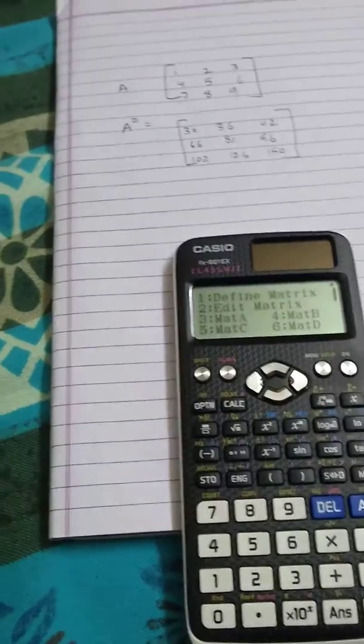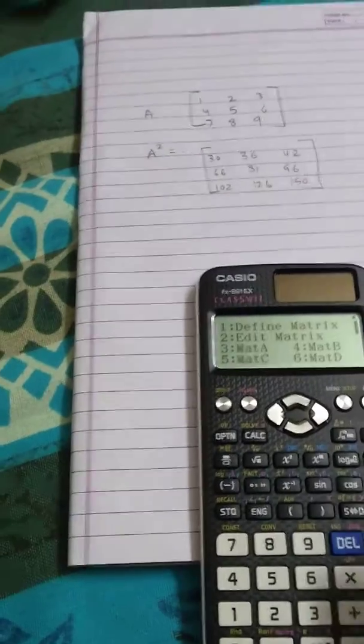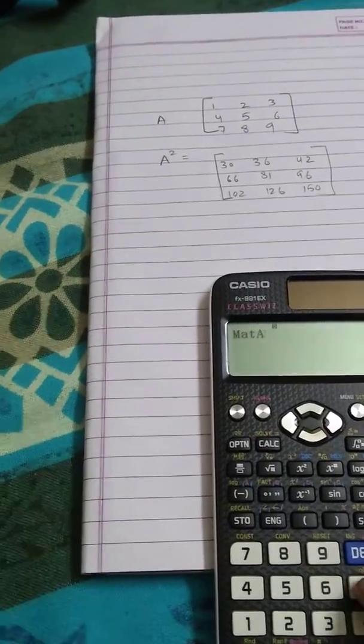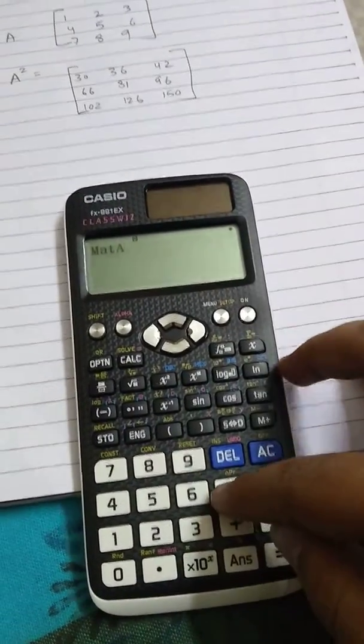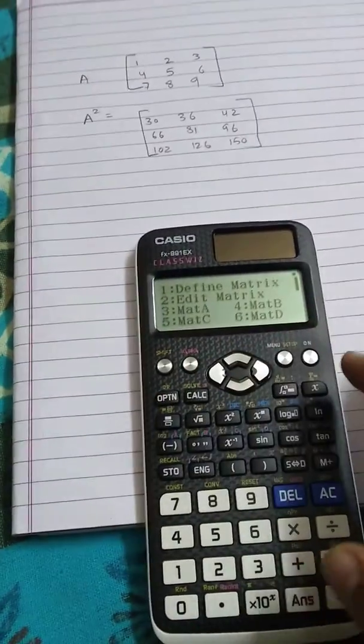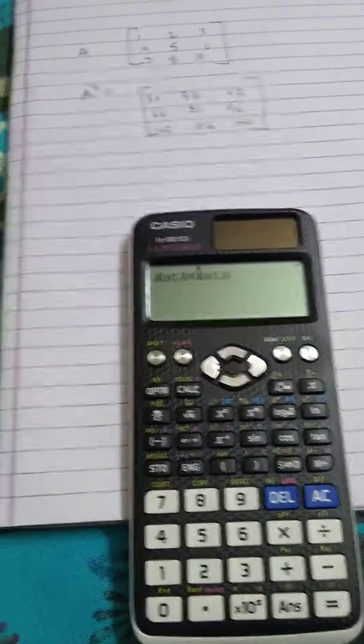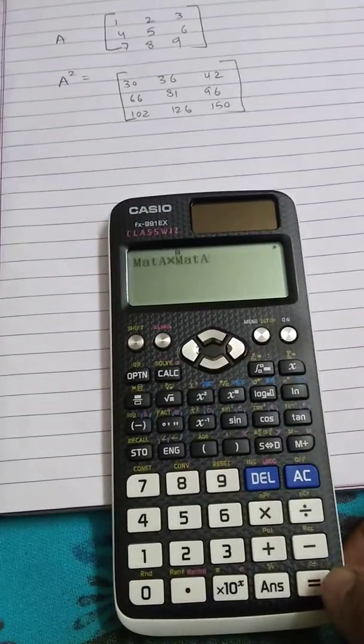We have to find the square, so I'll press 3 again because that's matrix A. We'll put a multiplication sign, then again press option, then again 3. So we can see matrix A into matrix A.